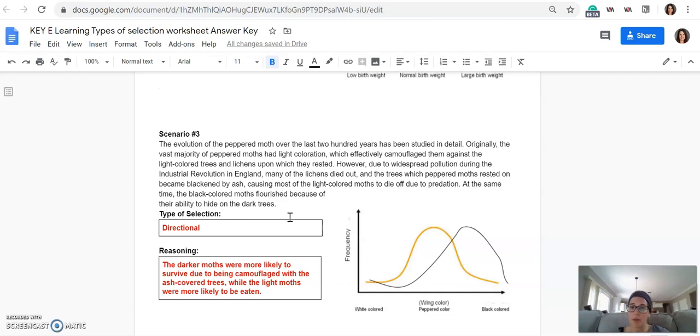However, due to widespread pollution during the Industrial Revolution in England, many of the lichens died out, which caused the trees to become darker. And the trees which peppered moths rested on became blackish by ash, causing most of the light colored moths to die off due to predation. So the birds could see these moths more easily now if they were light colored versus if they were dark colored, because the dark colored moths were now able to better camouflage against the trees. At the same time, the black colored moths flourished because of their ability to hide in the dark trees. So this is an example of directional selection.